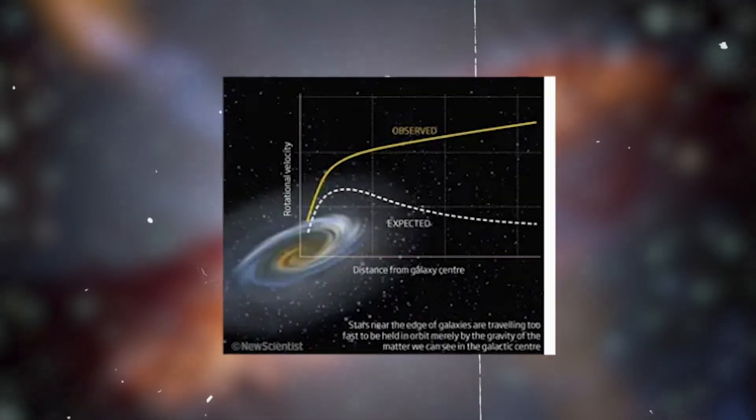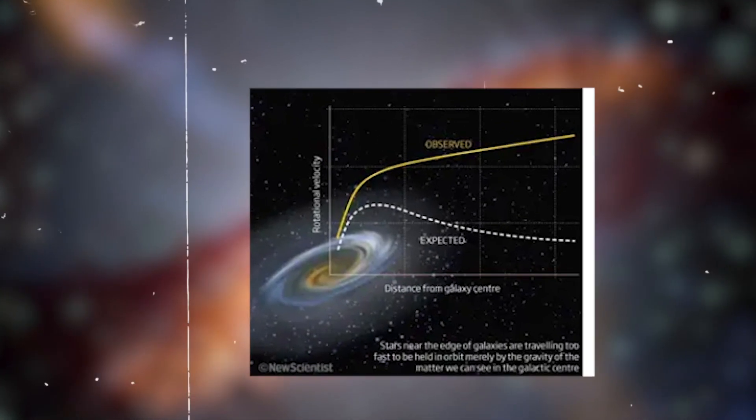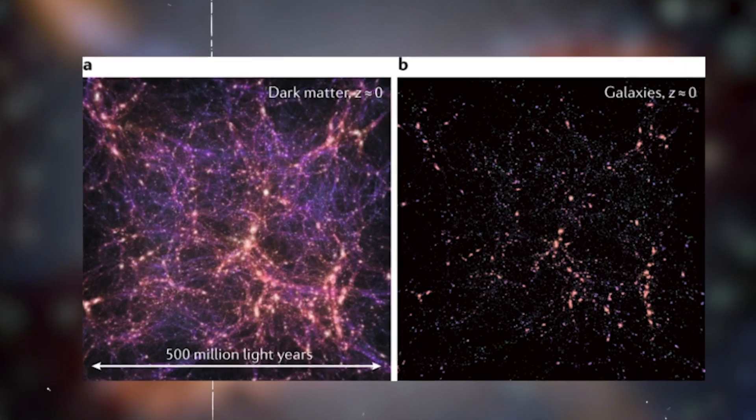The Dark Energy Spectroscopic Instrument, DESI, has made significant new observations of Andromeda and the inward migration of stars.